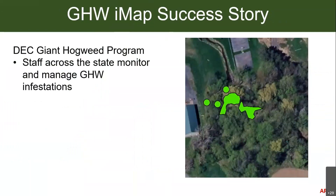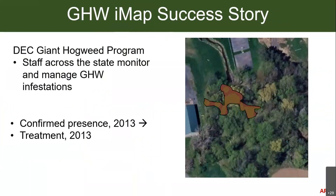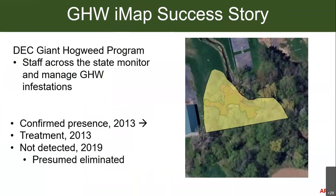Giant hogweed is a species where reporting has led to real success. A green-outlined infestation was confirmed in 2013, treated that year, and by 2019 was no longer detected. DEC goes back every year to treat hogweed populations until they're eradicated from an area, and that success depends on people like you reporting it. There are obviously many more invasive species to learn about, with plenty you can find in your backyard or neighborhood.